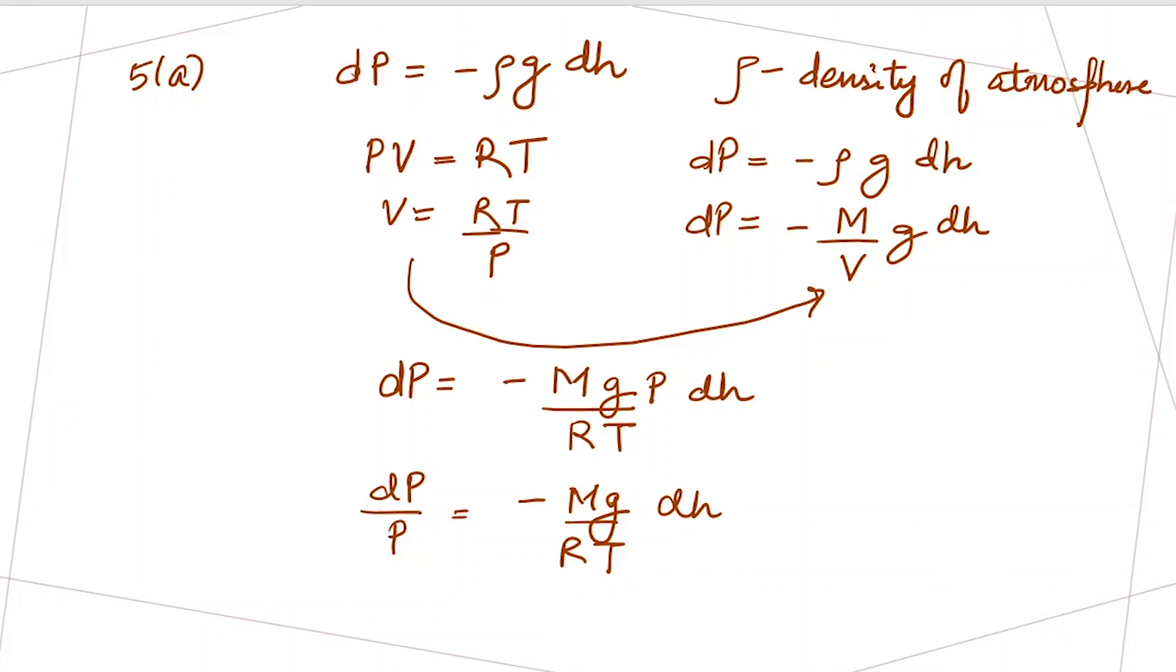We can put the limits. It's going from mean sea level, we will take this mean sea level to be zero, and to a height h. This is P naught, the initial pressure, and at height h the pressure will become half.